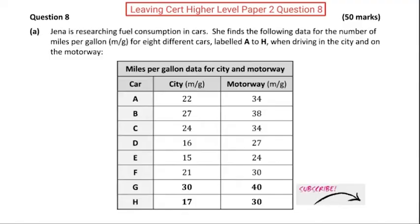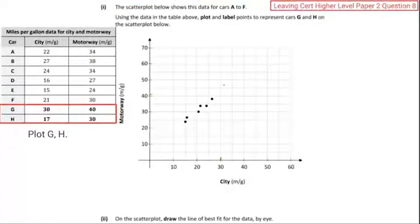Let's look at the second part. We need to plot points G and H. G is out 30 and up 40 — we go in there and write in G. And H is out 17 and up 30, so out 17 and up 30 gives you a point there, and that's H.